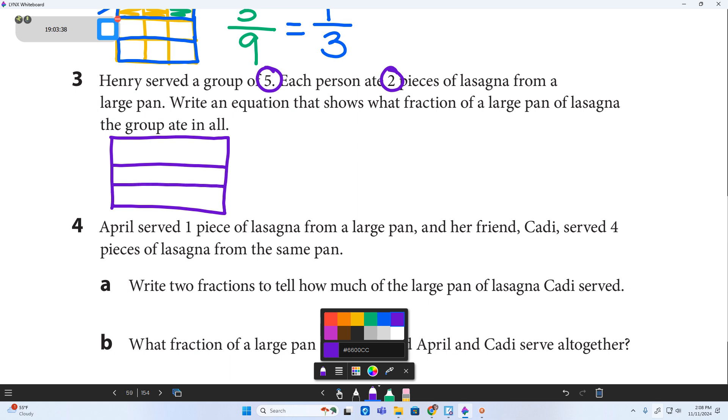And we've got three pieces on the side, and we've got four pieces across the top. There's our 12 pieces. And if five people each ate two pieces, that is ten pieces all together. And it doesn't really matter which ten you shade, as long as ten out of the 12. Alright, it says to write an equation that shows what fraction of a large pan of lasagna the group ate in all.